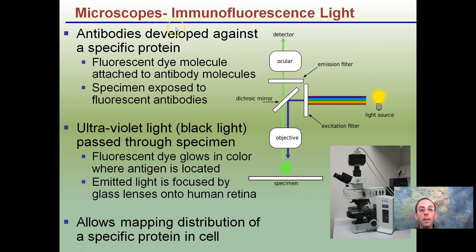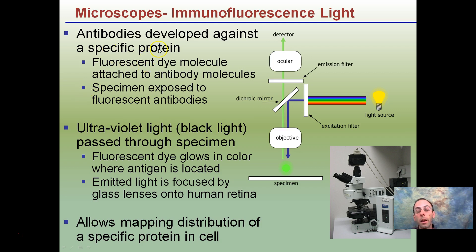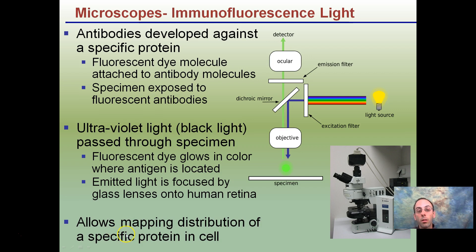This one's a little more complicated — the immunofluorescence light microscope. What this uses is antibodies developed against a specific protein that have a special dye attached to them. The antibodies bind to something specific, with a fluorescent dye allowing it to be illuminated with an ultraviolet or blacklight source. This allows mapping and distribution of specific proteins within a cell.